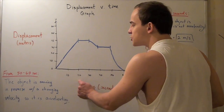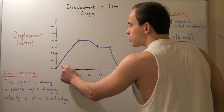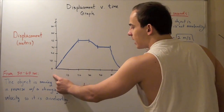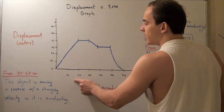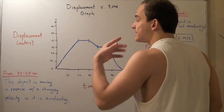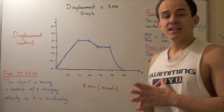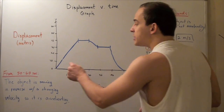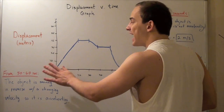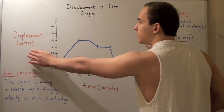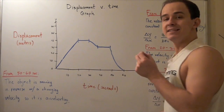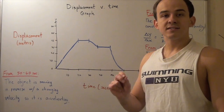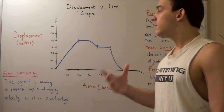From zero to twenty seconds, we have a positive straight line. That means our slope stays the same at this interval, and since our slope is constant, our velocity must be constant. Because what the slope tells us on a displacement versus time graph is the instantaneous velocity — the velocity at some given instant of our object.